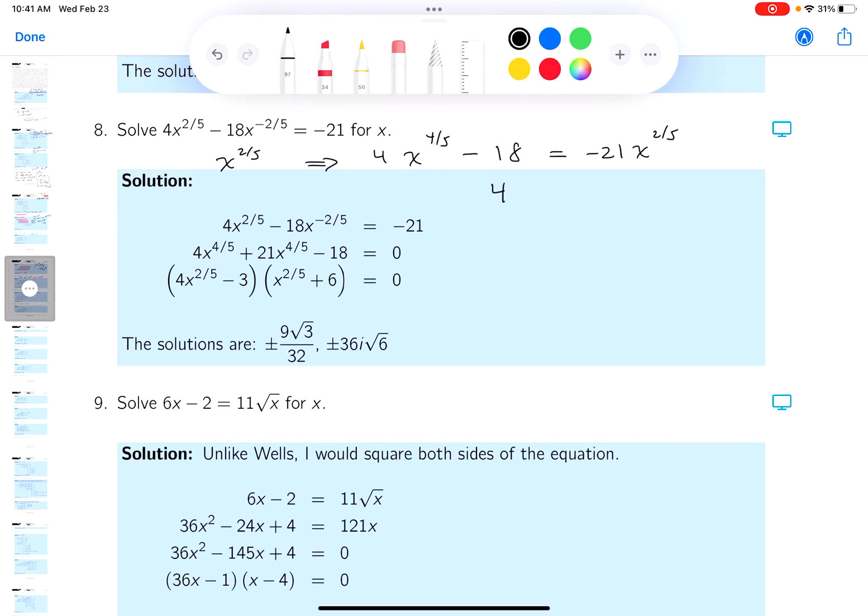Next step, I'm trying to get a zero in the problem. 4x to the four-fifths plus 21x to the two-fifths minus 18 equals zero. I want to show you where that is right over here. So we were able to get what they have in the key.